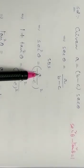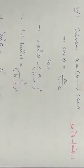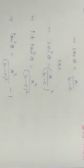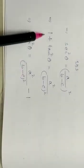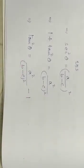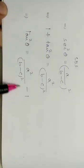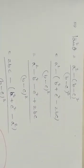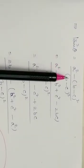Separating the whole squares: a squared by (b minus c) whole squared. Shifting the 1 to the other side gives minus 1, so tan squared theta equals a squared divided by (b minus c) whole squared minus 1.